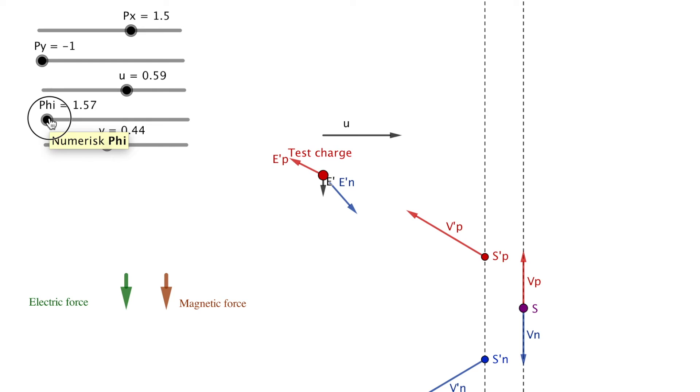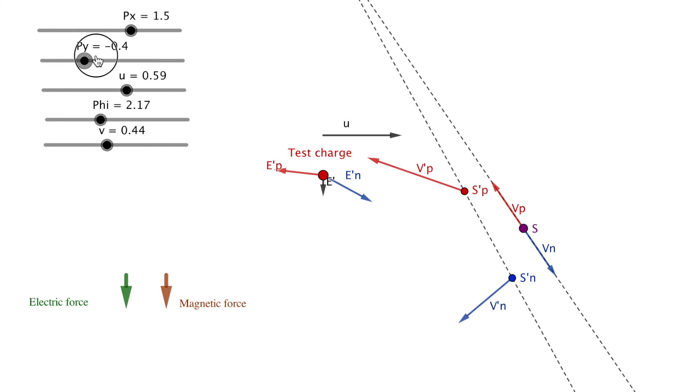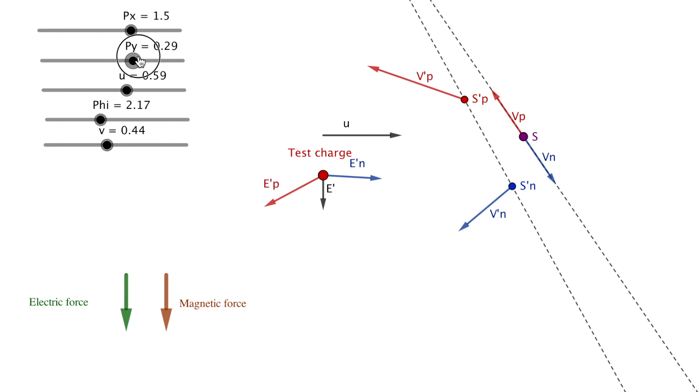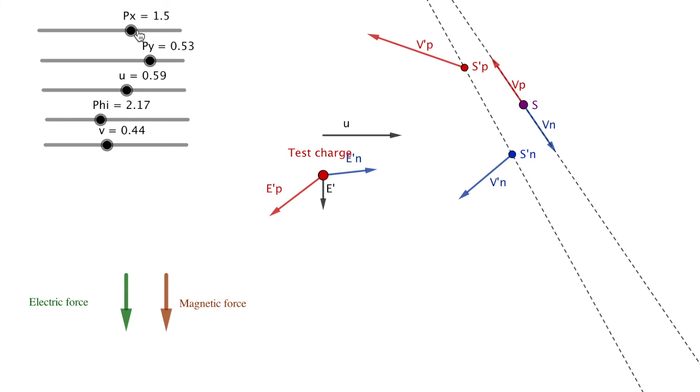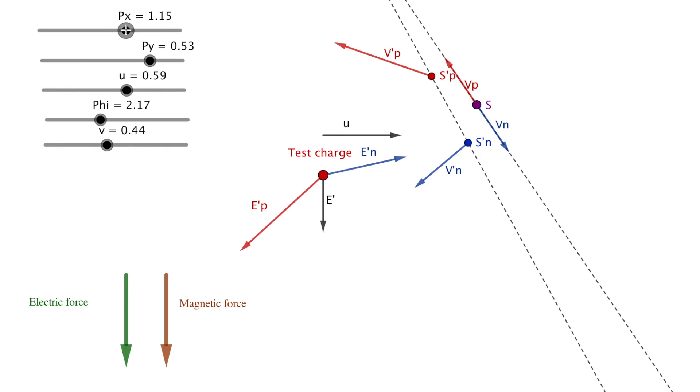It is intuitively hard to grasp that the total electric field maintains the same direction as we vary the position of the particle and the angle of the wire, but it does. This file is quite fun to play around with and it gives us a beautiful insight into the nature of magnetism.